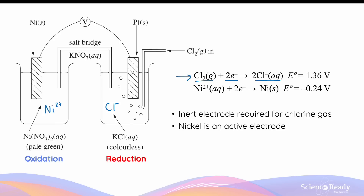The presence of the platinum electrode allows the accumulation of electrons in the reduction half cell, and as this occurs, the chlorine gas molecules are able to gain these electrons to undergo reduction to form chloride ions. In this example, the nickel electrode — which is the anode — is an example of an active electrode. The platinum electrode, or the cathode, is an example of an inert electrode. Its sole purpose is to conduct electrons, and the platinum is not involved in the redox reaction.